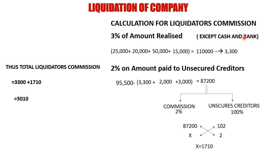To summarize the commission working: 3% was found on all assets realized except cash and bank. For 2% on unsecured creditors, since the receipt amount was insufficient, we took the receipt total, deducted expenses up to preferential creditors, and treated the balance as 102% (100% unsecured creditors + 2% commission). Solving gave us 2% = Rs. 1,710, which is the commission on unsecured creditors.